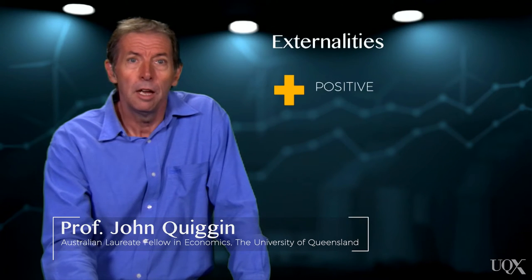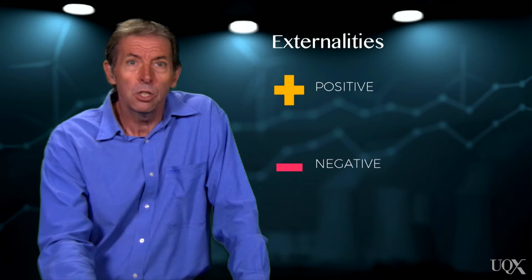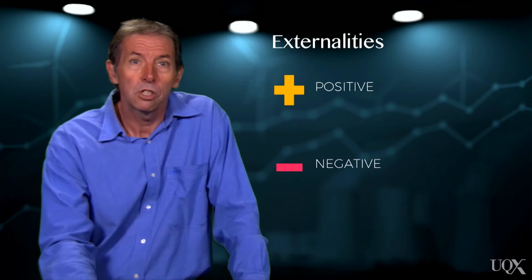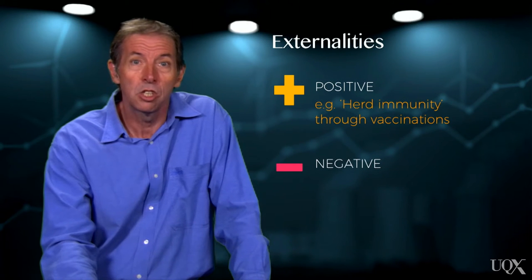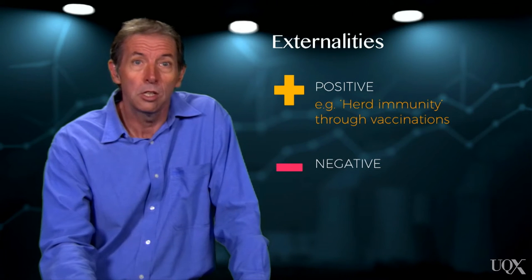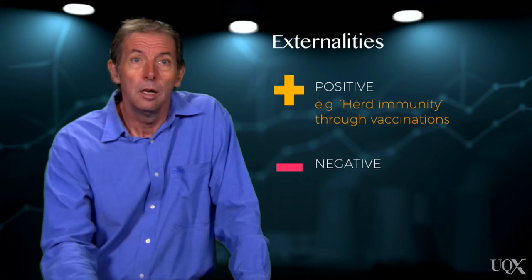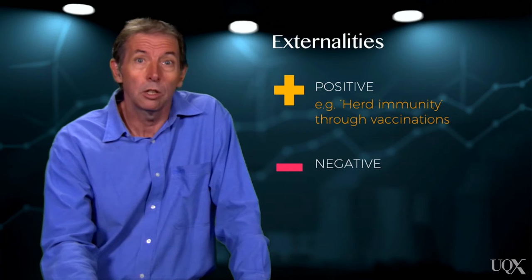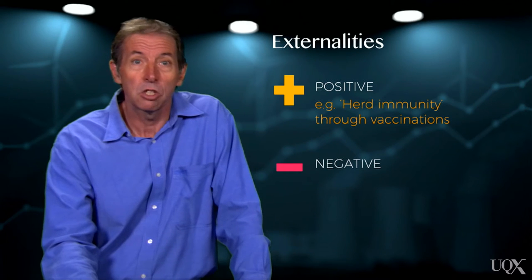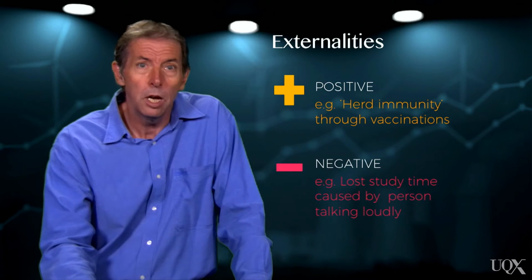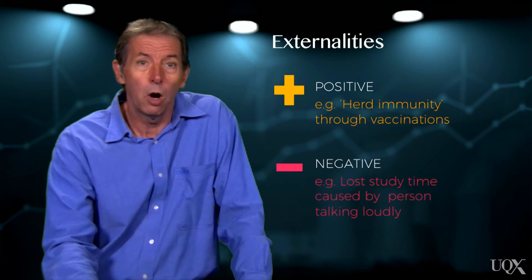Externalities can be both positive and negative. Positive externalities can be good for society. For example, if a sufficiently large proportion of the population is vaccinated against disease, the entire population gains what's called herd immunity. Negative externalities, on the other hand, are often problematic. Sometimes negative externalities are relatively inconsequential in the grand scheme of things, such as a person talking loudly on a phone. But when negative externalities are more widespread, they can become costly for the wider community.